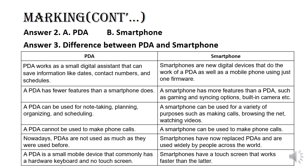A smartphone is a new digital device that does the work of a PDA as well as a mobile phone using just one firmware. This means a smartphone has all features of a PDA and additional features like making phone calls. For example, a PDA has fewer features than a smartphone, while a smartphone has more features.